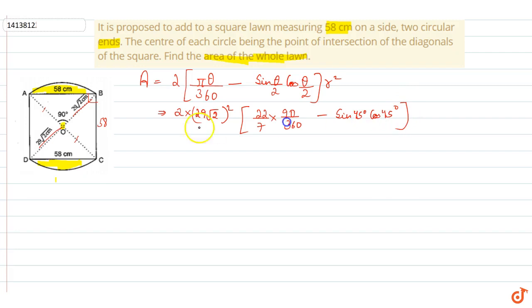This will come to us further solve. 2 into 29 square into 2 into 11/14 minus 1/2. So, this will come to us further solve.